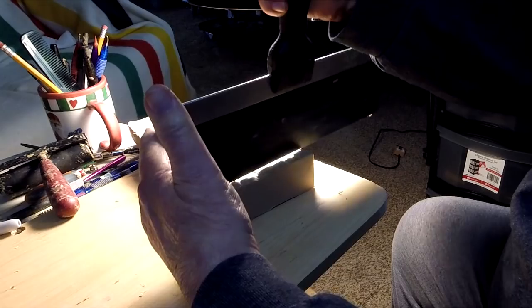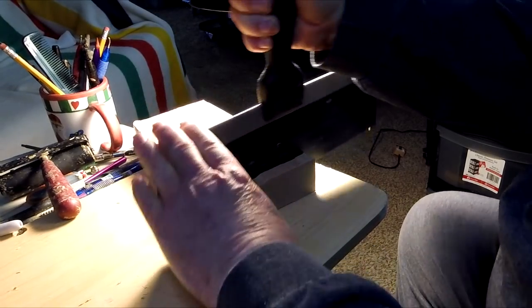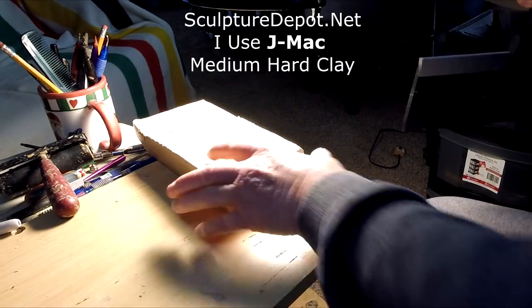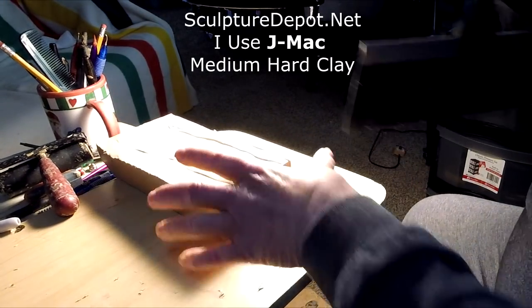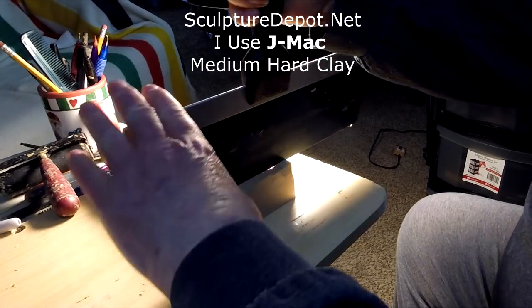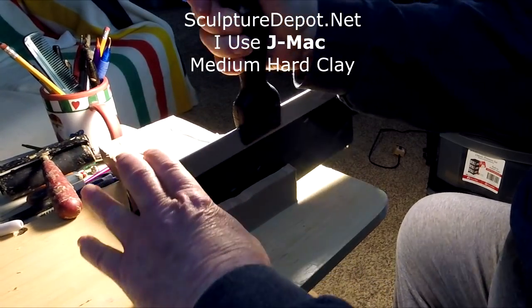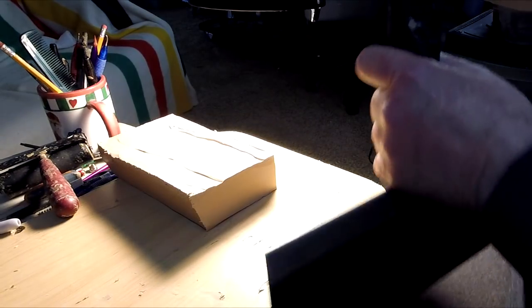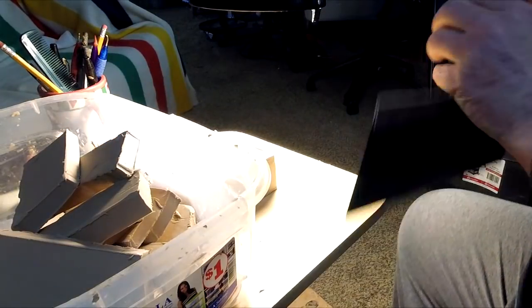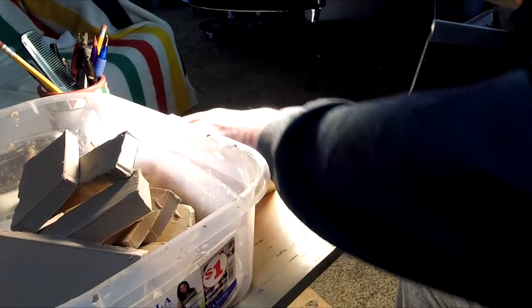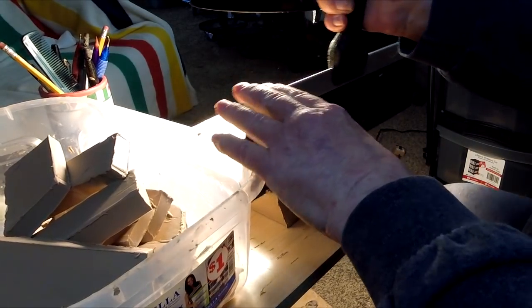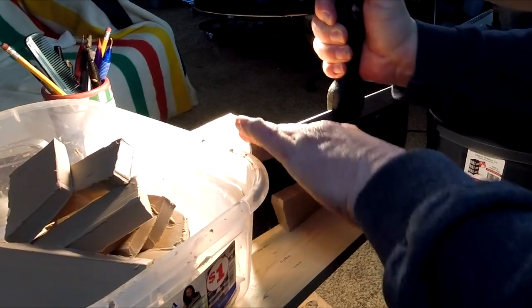I get this plastiline clay from a place called Sculpture Depot in Loveland, Colorado. You can pretty much buy all your supplies that you'd ever want as a sculptor from them. They carry just about everything you could imagine that a sculptor would need.